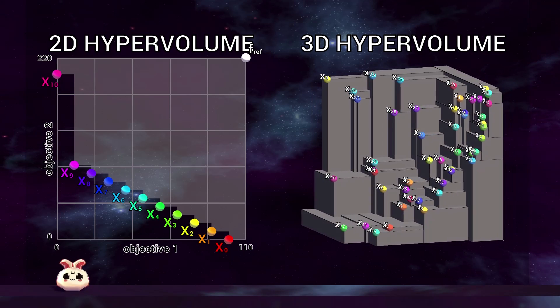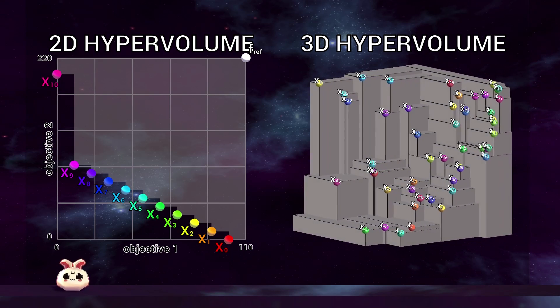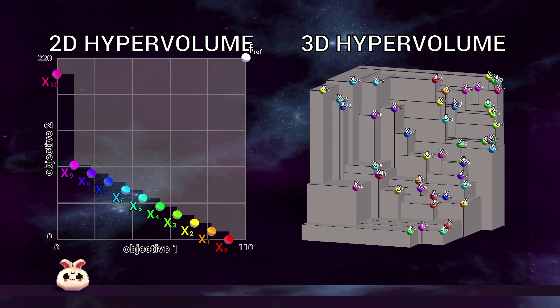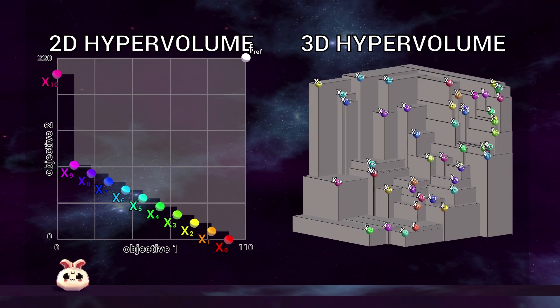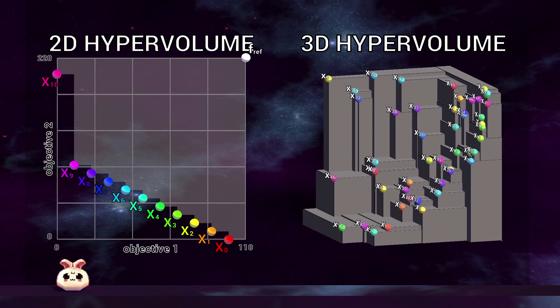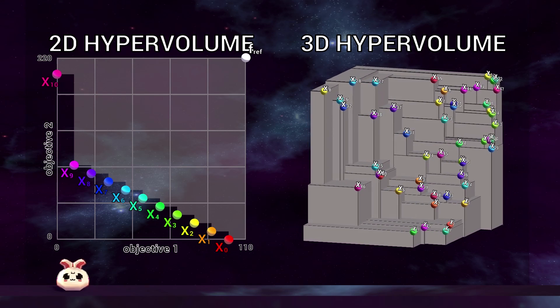Here we can see unrelated visualizations of the hypervolume indicator. It can score a set of solutions by using the solutions, the intersecting points, and an additionally selected reference point to form an n-dimensional polytope. In more than three dimensions, the volume of this polytope is referred to as the hypervolume.